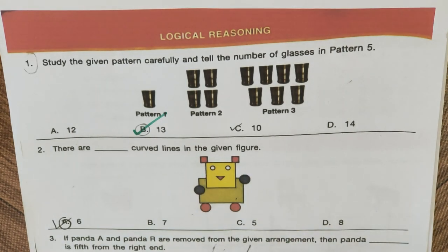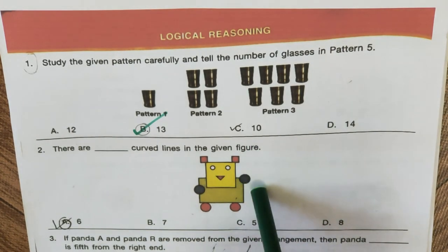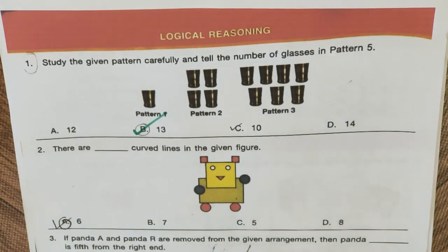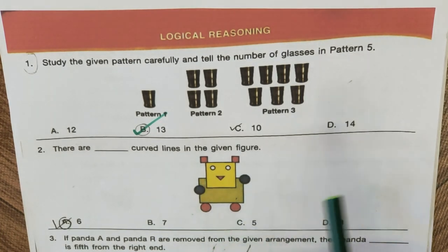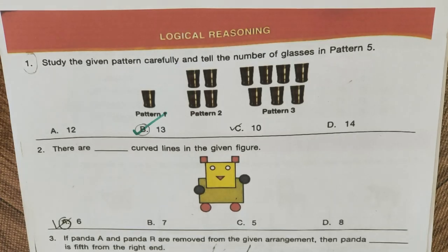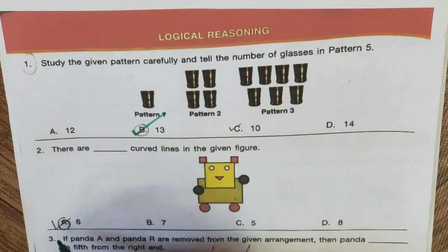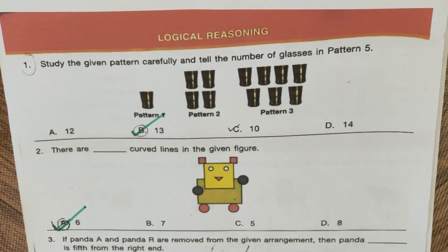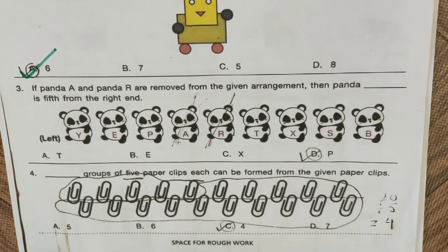Question 2: How many curved lines are in the given figure? Curved lines are only possible where there is a curve or circular structure. Squares, rectangles, and triangles have straight lines. Counting the circular structures, there are 6 circles in the figure, so there are 6 curved lines. Hence the answer is A.